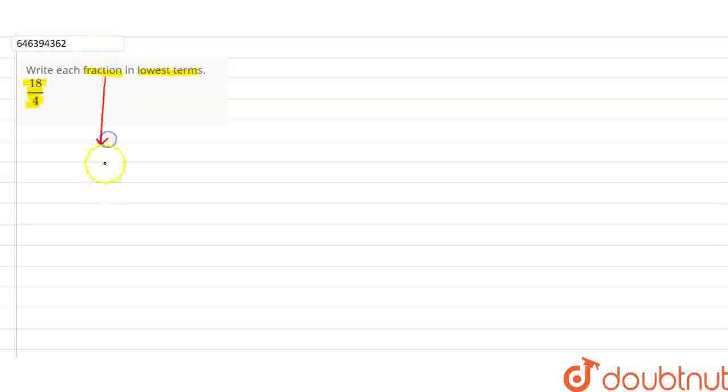First of all, we need to understand the fraction. What is a fraction? A fraction is in the form of numerator over denominator. So our question is 18 over 4, where 18 is the numerator and 4 is the denominator.